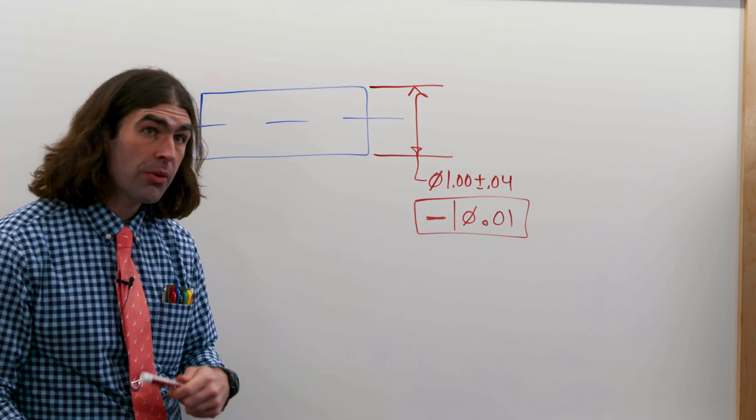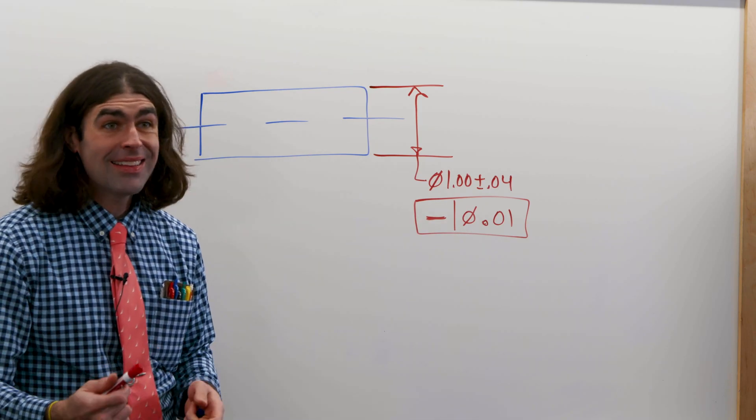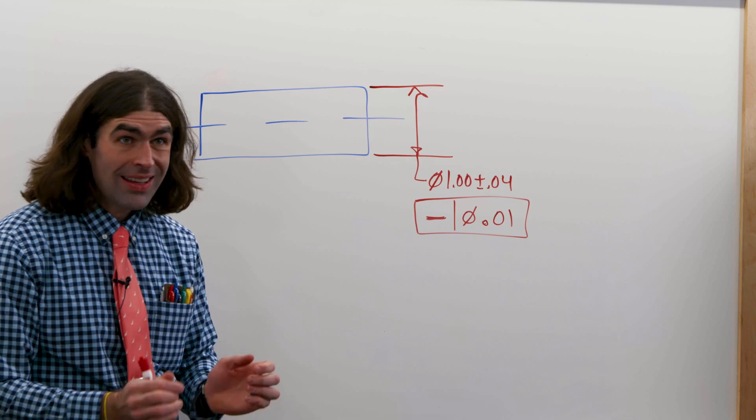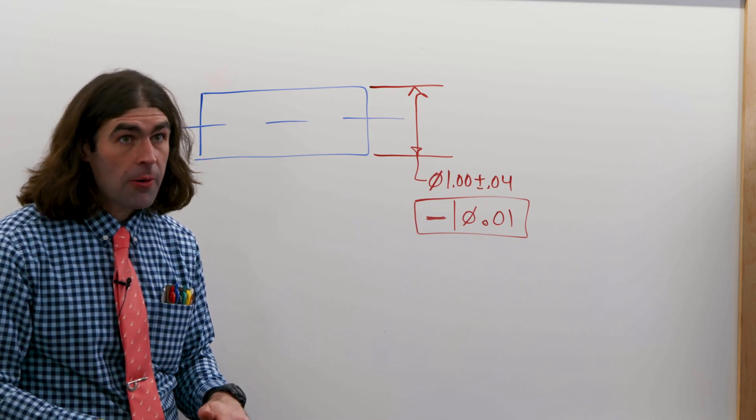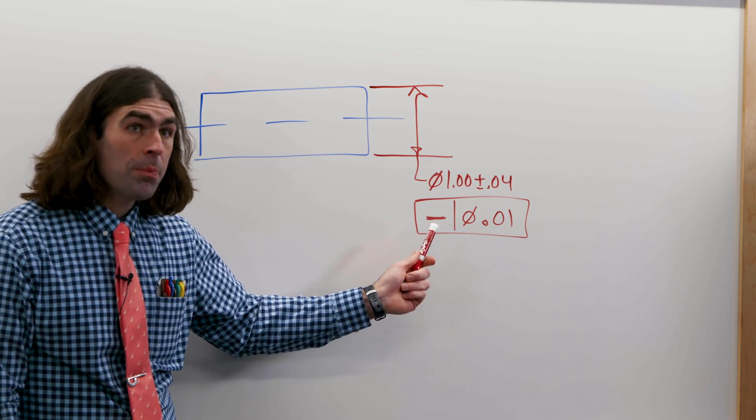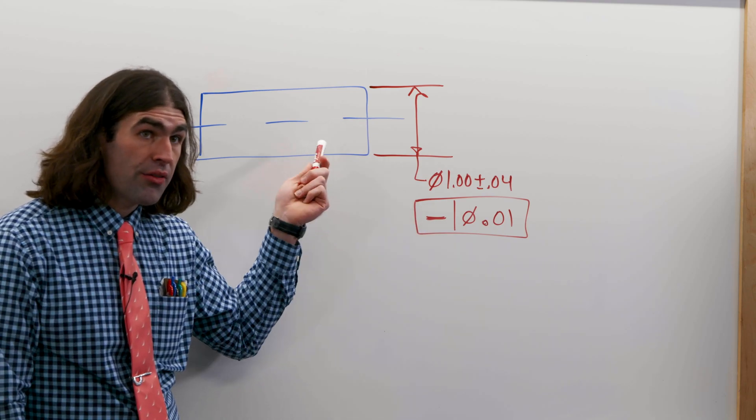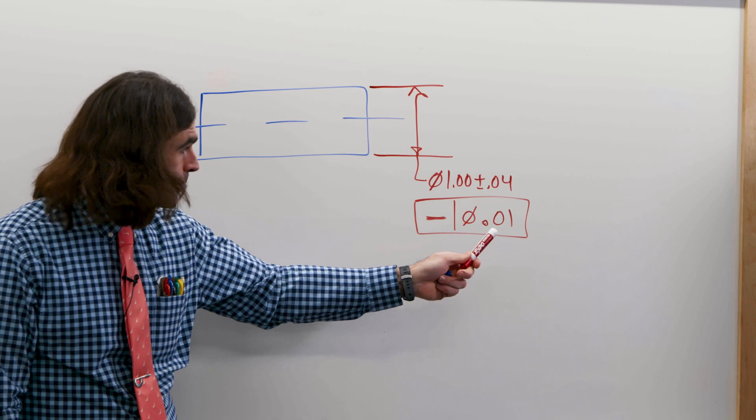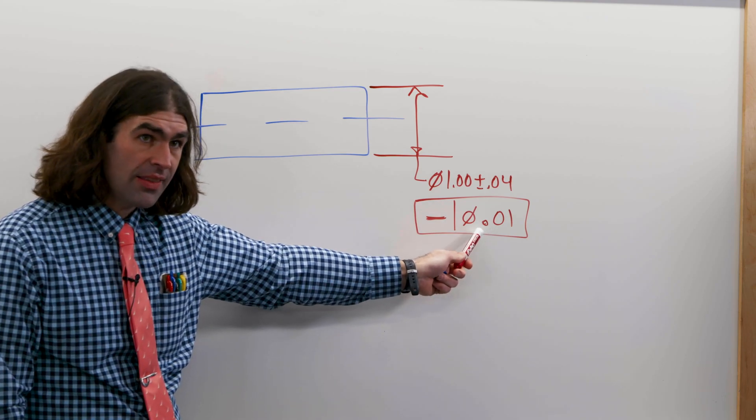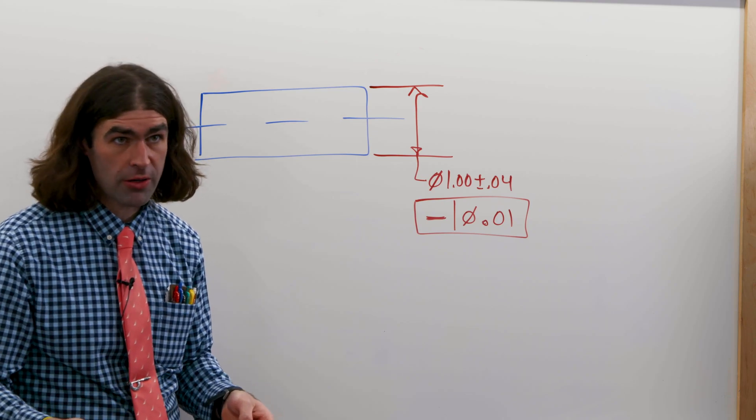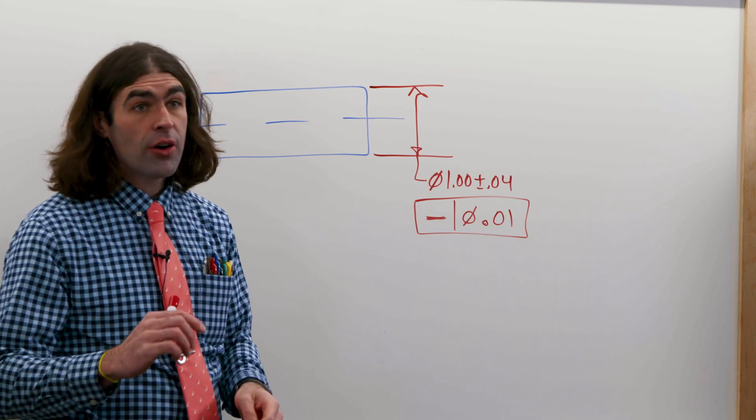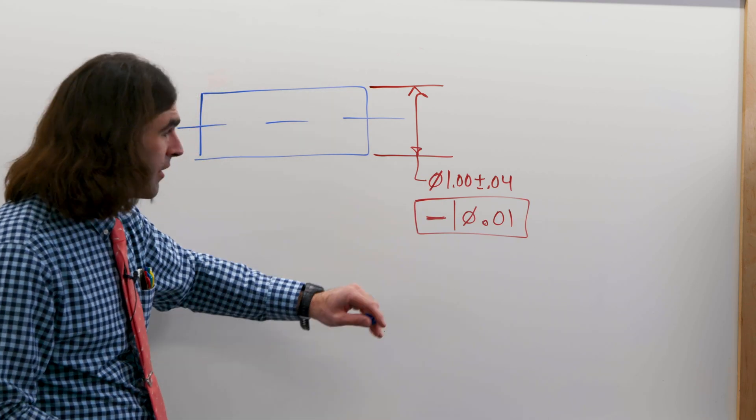Also, we've got a diameter symbol in the feature control frame. This indicates that the tolerance zone is cylindrical. It happens to be in the middle of the part. So this tolerance is telling you that the derived median line of this feature needs to be within a ten thousandths diameter tolerance zone in the middle of the part. Very different from surface straightness. It's written differently.